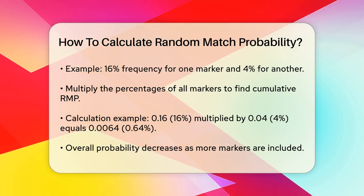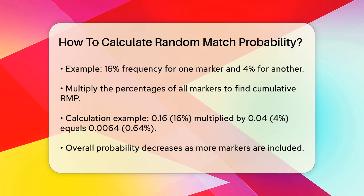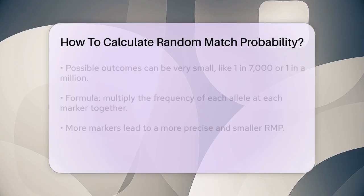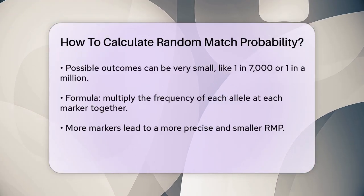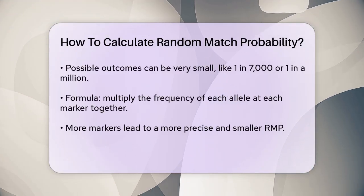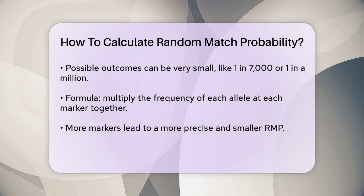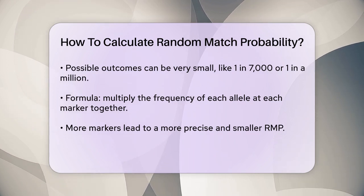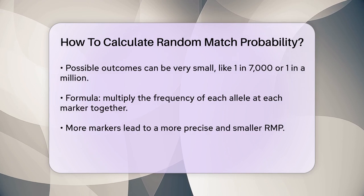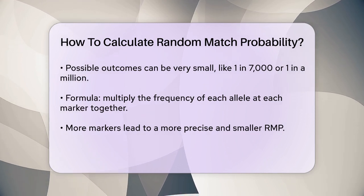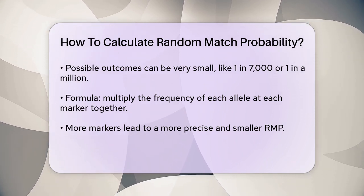The formula is simple: you take the frequency of each allele at each marker and multiply them all together. The higher the number of markers you use, the more precise and smaller the RMP becomes. This is because each additional marker reduces the likelihood that a random person would match the entire profile.